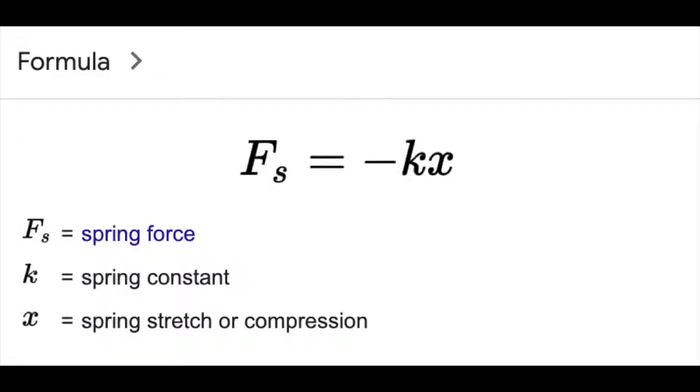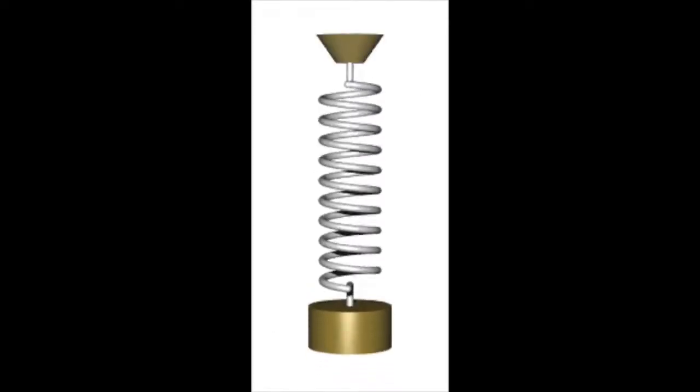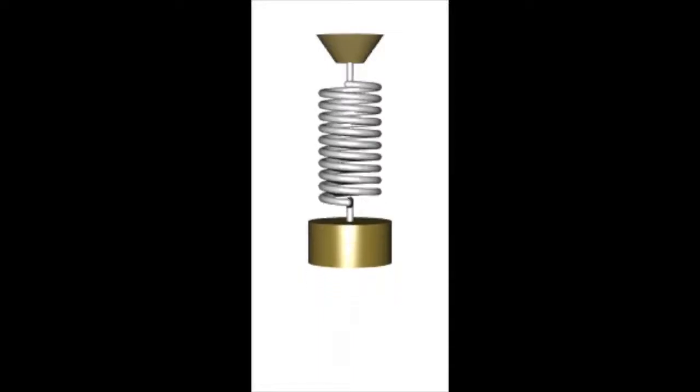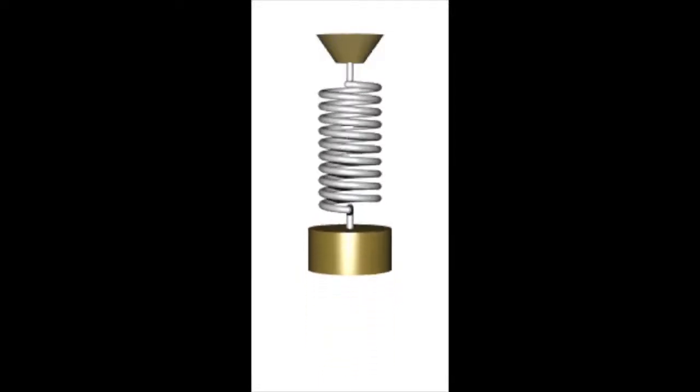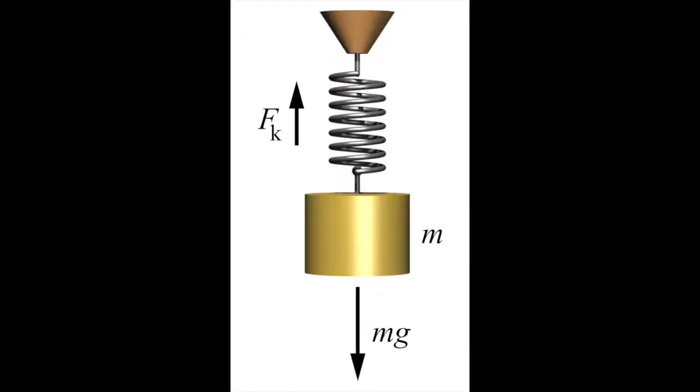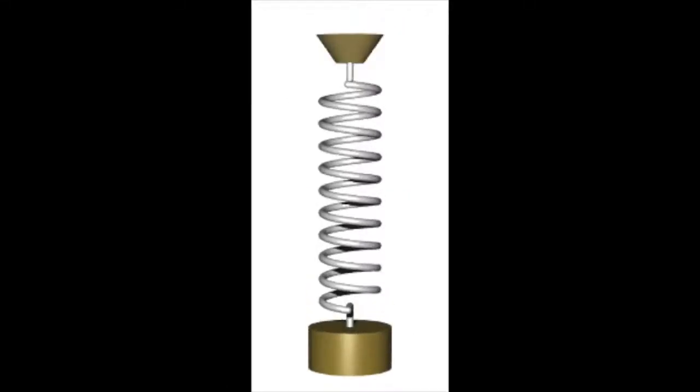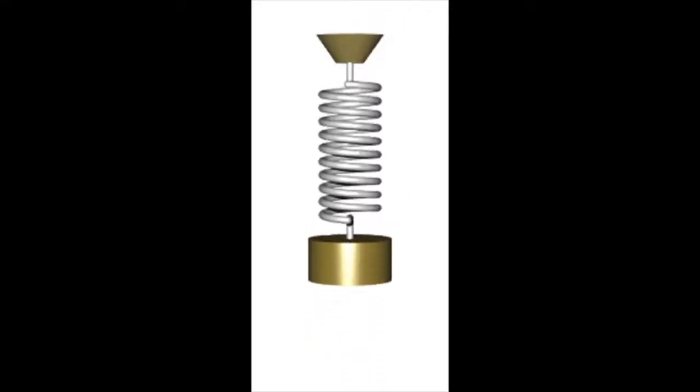The force of the spring is given by the equation F equals negative kx, where F is the force of the spring, k is the spring constant, and x is the distance the spring is displaced. To find the gravitational acceleration g, the spring should be hung vertically, so that only the force of gravity acts on the spring, thus the force on the spring can be written as negative kx equals mg. However, notice that we do not have the values for any of the variables.